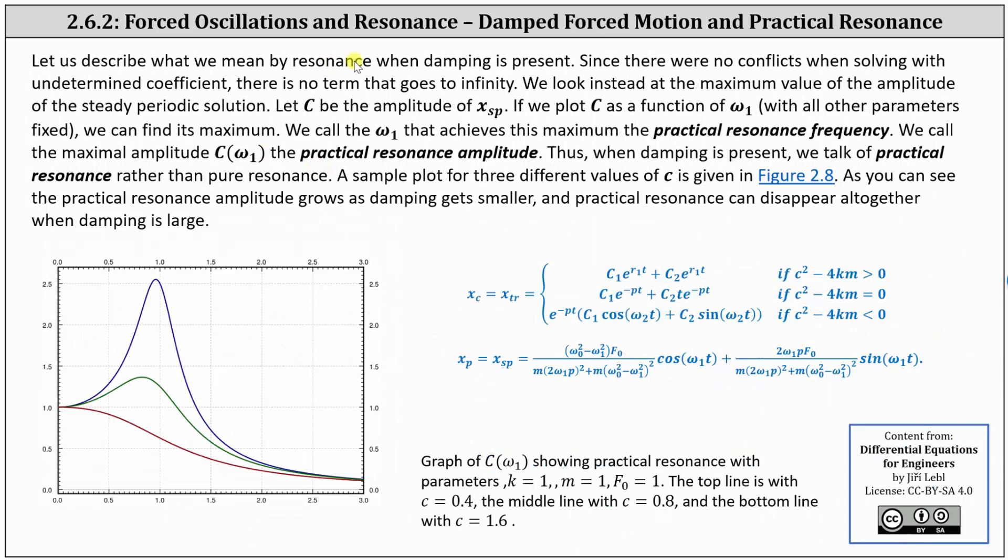Let us describe what we mean by resonance when damping is present. Since there were no conflicts when solving with undetermined coefficients, there is no term that goes to infinity. We look instead at the maximum value of the amplitude of the steady periodic solution. Let c be the amplitude of the steady periodic solution. If we plot c as a function of ω_1 with all other parameters fixed, we can find its maximum.